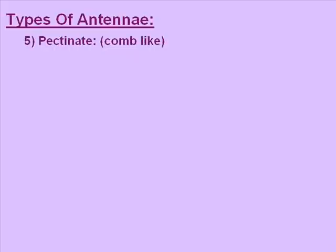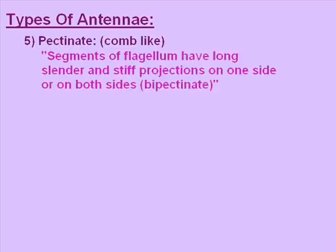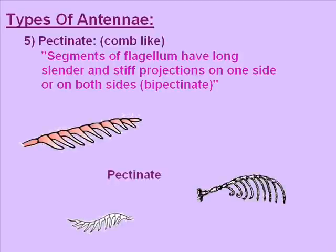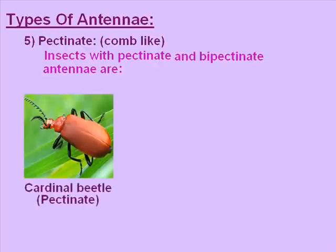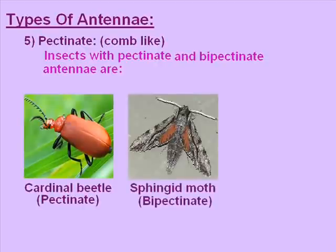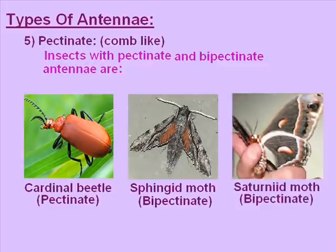The fifth type of antenna is pectinate. Pectinate means comb-like structure. The segments of the flagellum have long, cylindrical, and stiff projections on one side or on both sides. When projections are on both sides it is called bipectinate, and when on one side it is called pectinate. Insects with pectinate and bipectinate antennae are click beetle with pectinate, sphingid moth with bipectinate, and saturniid moth with bipectinate antenna.